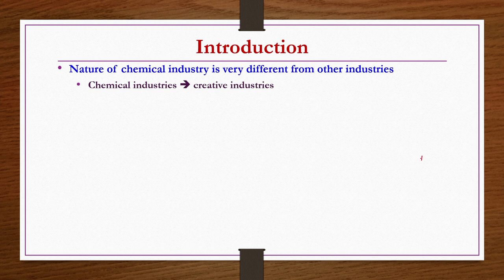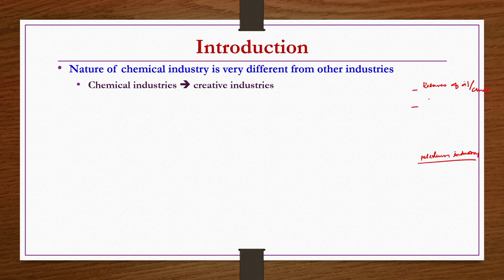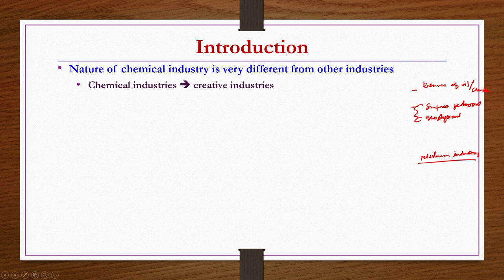Let us say you have a petroleum industry, which is also one of the chemical industries. In the petroleum refinery, you find out the reserves of oil, crude, etc. Then you try to estimate how much is available and whether it is profitable to do drilling and excavation to get the oil reserves from underground.